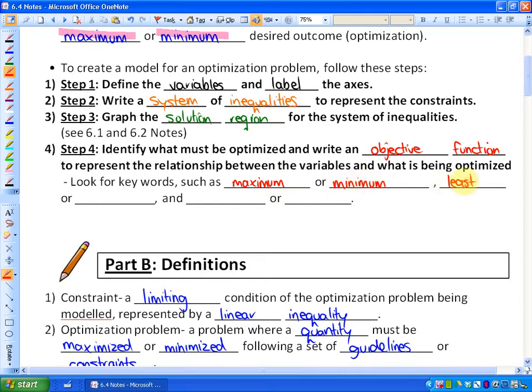Other words to look for would be least and greatest. These are optimization type words, or you could look for words like maximized. It's not limited to these words, and minimized.